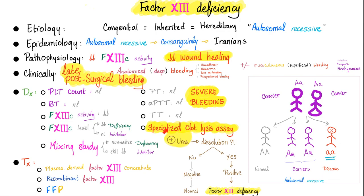To diagnose Factor 13 deficiency, we use a specialized clot lysis assay. We attempt to destroy the clot by adding urea. Urea will destroy a clot only if it is weak — so if the clot gets destroyed, this is a positive test, meaning the patient has Factor 13 deficiency. But if the clot is strong because Factor 13 is robust and functional, the clot will not dissolve and the test is negative. Remember: in medicine, a positive result is usually bad news.